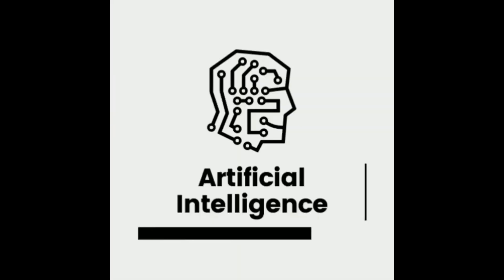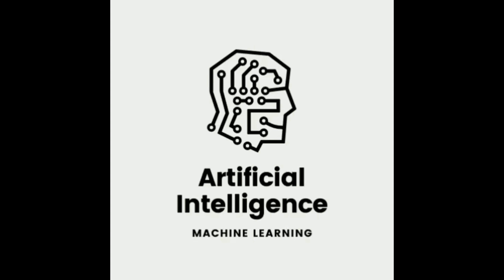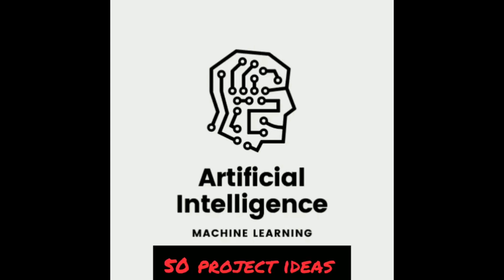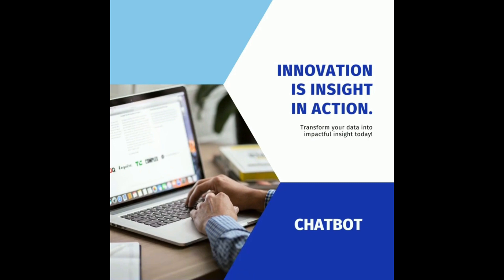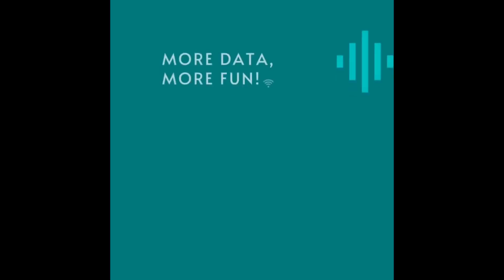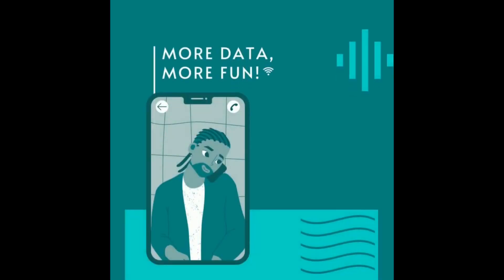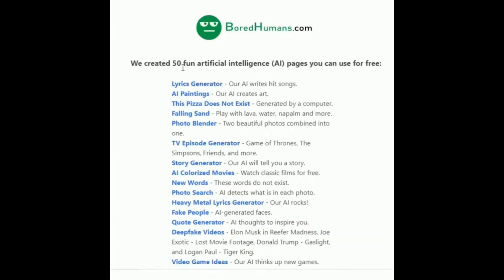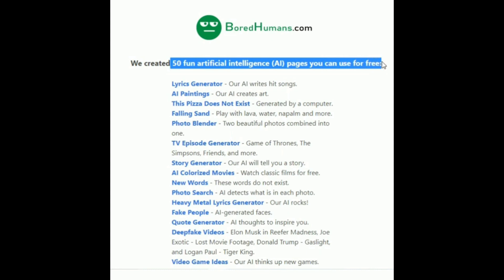I am going to tell you about one website through which you can create 50-plus artificial intelligence projects. These projects are not only informative but very interesting to try. The name of the website is boredhumans.com, where you can find 50 fun artificial intelligence pages.